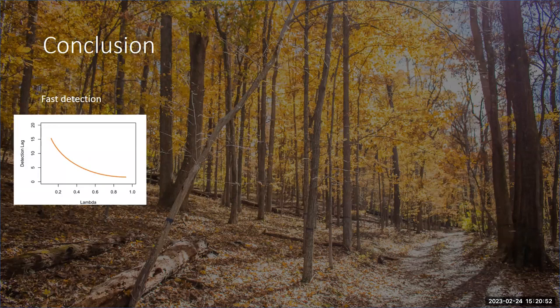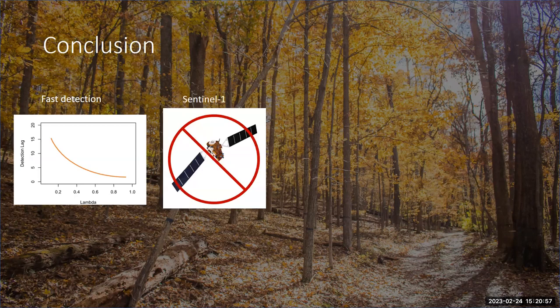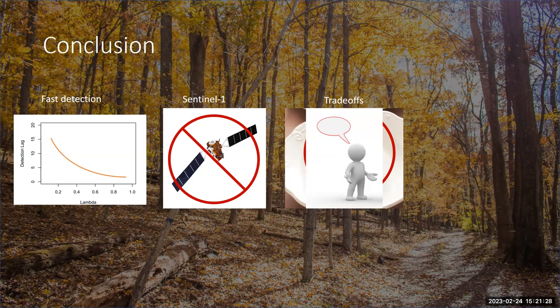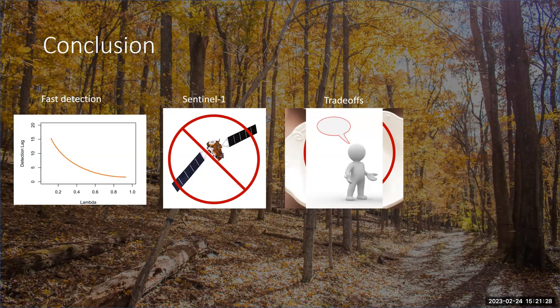Our final takeaways: Number one, our new method is able to detect a wide range of disturbance sizes relatively quickly, even using the slowest lambda. Number two, despite its ability to provide more data, Sentinel-1 does not significantly improve our results. Number three, we quantify the tradeoffs between latency and accuracy and, like previous studies, found no optimum — so you cannot have your cake and eat it too. Because of this, we emphasize that these tradeoffs must be reported to the users of these algorithms, otherwise it's not usable to those on the ground. Our research pushes the limits of deforestation monitoring with a simple multi-source method that gets good results in a difficult scenario. Thank you.